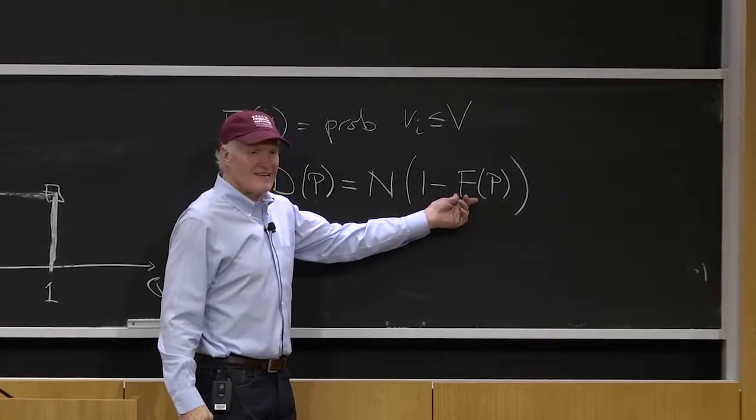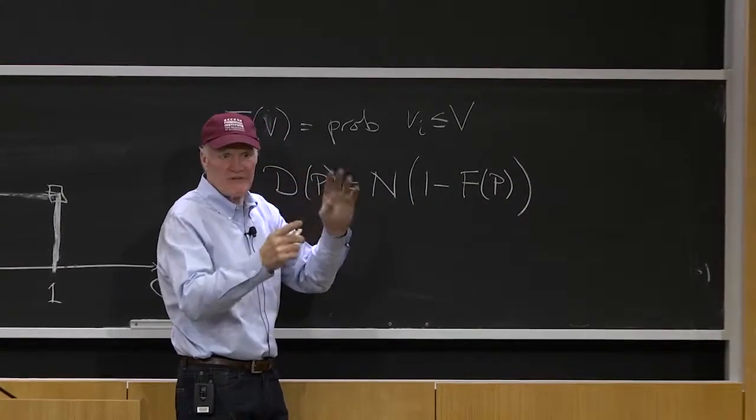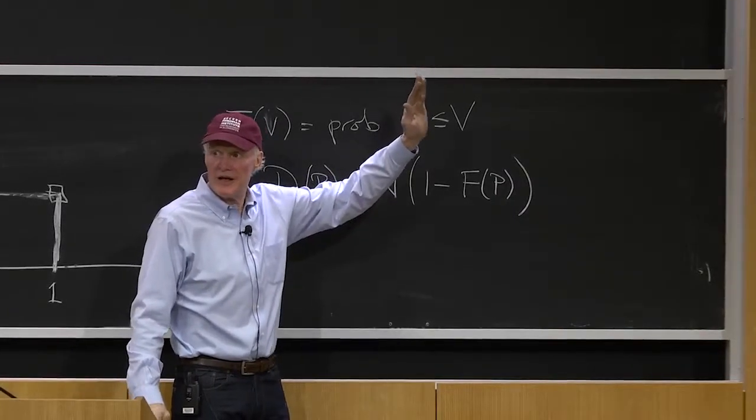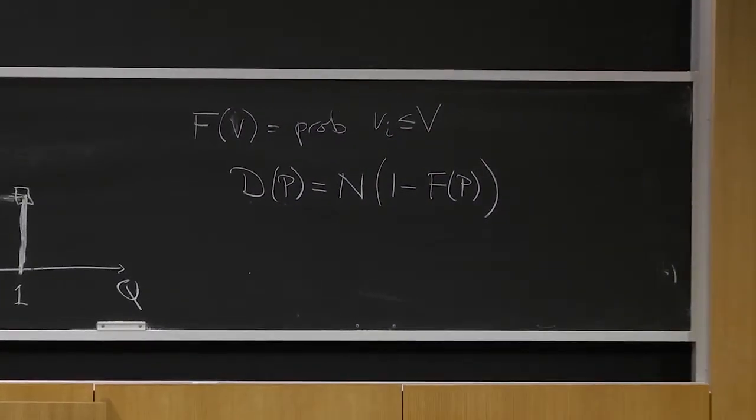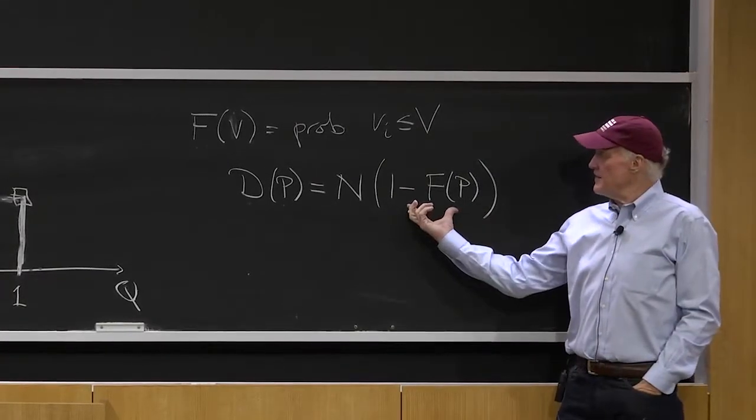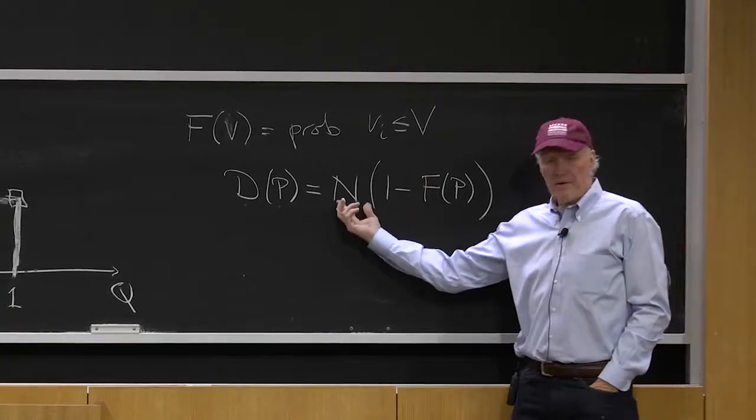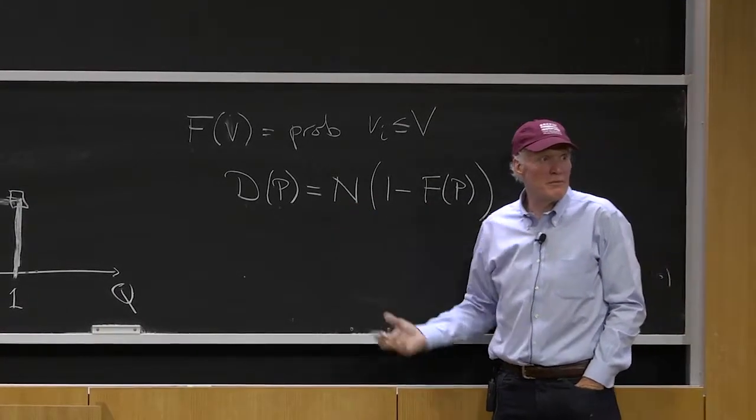If this is not a continuous distribution, then you really got like a bunch of people who are indifferent. But let's just assume F is a nice continuous function. If it's continuous, then this formula will hold. That will be the fraction of people that will buy. That's the fraction that have v bigger than or equal to p. And then we multiply that times the number of people, and that gives us the total number of people who want to buy.